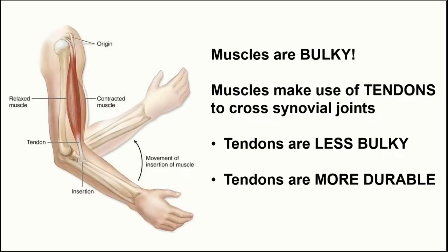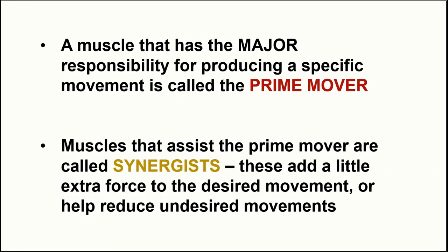Muscles tend to be bulky, especially when they contract and bulge. To avoid unnecessary bulk at a joint — which could hinder movement — muscles make use of very thin tendons, which are much less bulky when they cross synovial joints. Tendons are also more durable than muscle tissue and better able to withstand potential damage from movement at a joint, preventing many unnecessary muscle injuries.